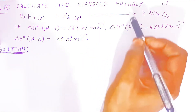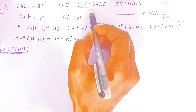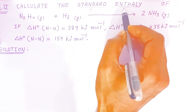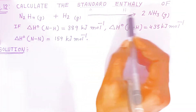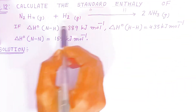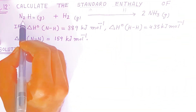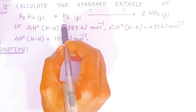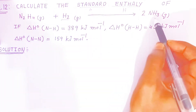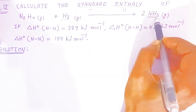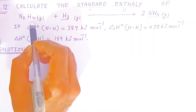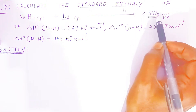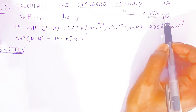In question number 12, we have to calculate the standard enthalpy — represented with the superscript zero — the change in standard enthalpy of this reaction. The reaction given is: when dinitrogen hydride (N₂H₄) reacts with hydrogen gas, both in gaseous state, one mole of N₂H₄ reacts with one mole of H₂ gas to form two moles of ammonia gas.